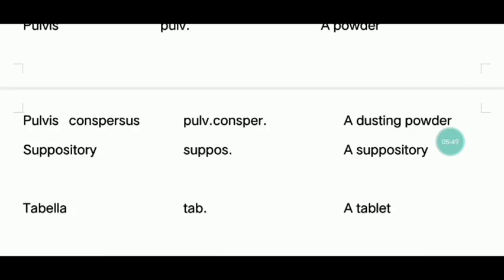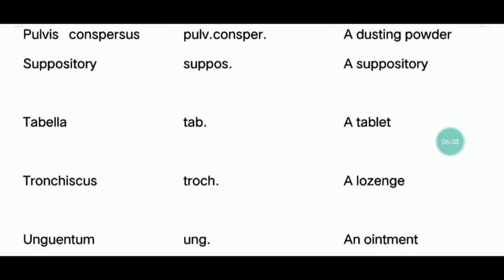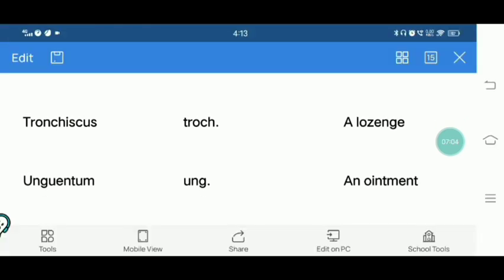Suppository — one type of medication that is inserted into the rectum, vagina, or urethra to break down and be absorbed by the body. Next — tablet. Trochiscus — lozenges — this is a solid dosage form that disintegrates slowly.